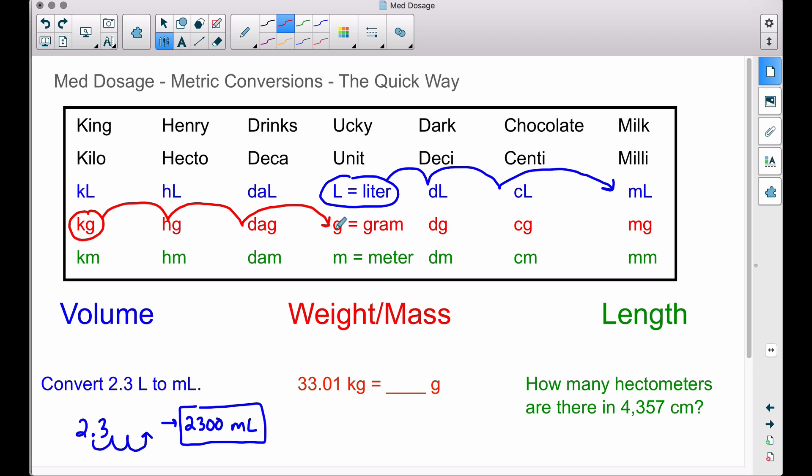How many places did we move? One, two, three to the right. So if we take this number 33.01, let's move one, two, three to the right, which means we need to add one extra zero here. So therefore we have thirty-three thousand ten grams.